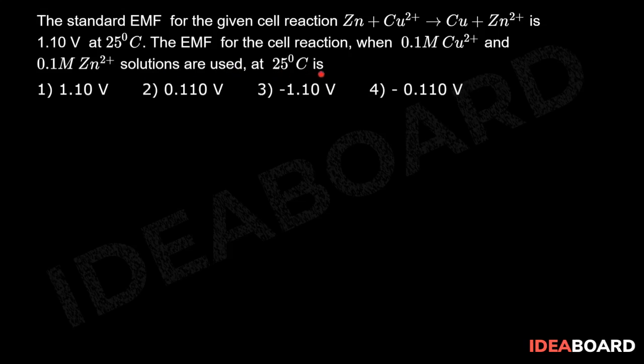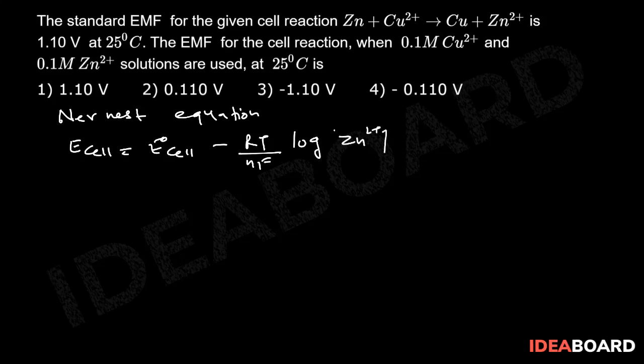We can calculate this value by Nernst equation. From Nernst equation, E cell will be equal to E not cell minus RT divided by nF log product upon reactant, and for this reaction this will be Zn²⁺ upon Cu²⁺.